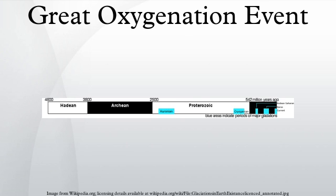Free oxygen is toxic to obligate anaerobic organisms, and the rising concentrations may have wiped out most of the Earth's anaerobic inhabitants at the time. Cyanobacteria were therefore responsible for one of the most significant extinction events in Earth's history. Additionally, the free oxygen reacted with atmospheric methane, a greenhouse gas, greatly reducing its concentration and triggering the Huronian glaciation, possibly the longest snowball Earth episode in the Earth's history.